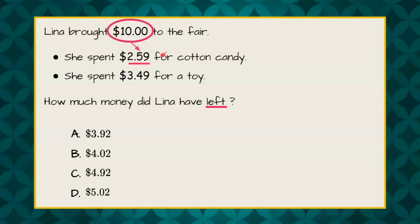The first thing she did was spend $2.59 for cotton candy. So, she's giving the fair people the cotton candy $2.59. They're taking that away or subtracting it from her $10. So, let's set up our subtraction problem. She started with $10 and she paid $2.59, which means she subtracted $2.59 from the money that she has.